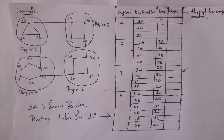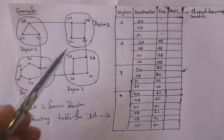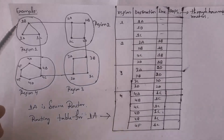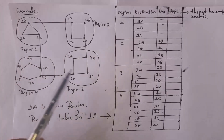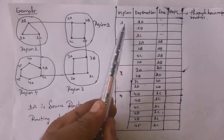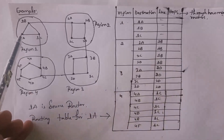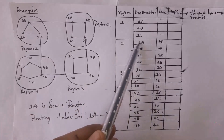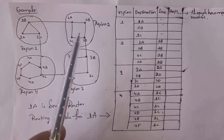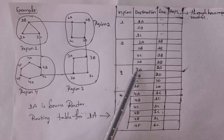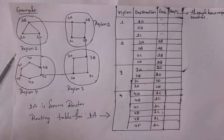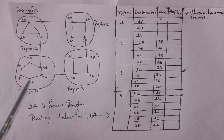Let me explain hierarchical routing with a detailed example. The entire network is divided into four regions. Region 1 contains routers 1A, 1B, and 1C. Region 2 contains routers 2A, 2B, 2C, and 2D. Region 3 contains routers 3A, 3B, 3C, and 3D. Region 4 contains routers 4A, 4B, 4C, 4D, 4E, and 4F.